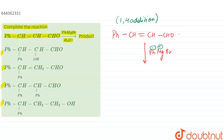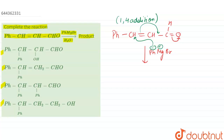Addition will take place on one of these carbons, so the nucleophile Ph⁻ will attack at this position. Ph⁻ will attack here and this double bond will shift. The CH=O can be written as C=O and H, so when this double bond shifts, the electrons of this bond will move.